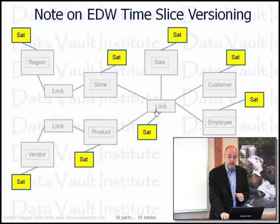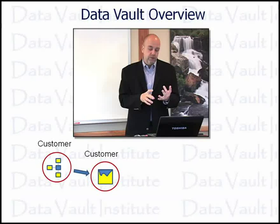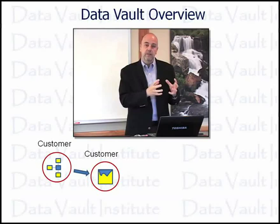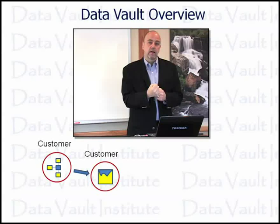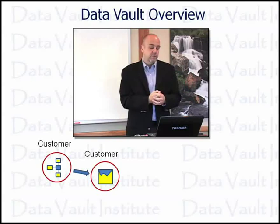If I have a customer in third normal form or as a star schema dimension, it's going to translate into a structure that includes at a minimum a business key hub and at least one — usually multiple — satellites around it. So the data vault approach brings us to additional table structures broken out by the type of data.